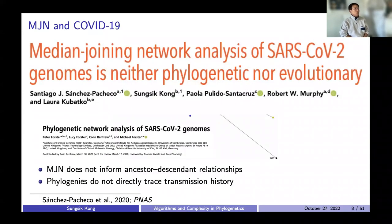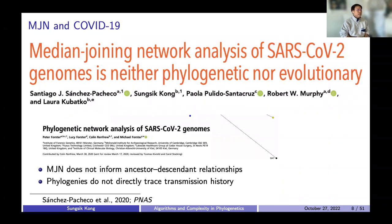So myself, along with my colleagues and advisors, submitted a rebuttal letter to PNAS, also with a strong title saying 'The Median Joining Network Analysis Is Neither Phylogenetic Nor Evolutionary.' In this study, we tried to make two points. The first is that the median joining network does not inform ancestor-descendant relationships; therefore, we can't identify the origin of the pandemic. The second point is that even if somehow the median joining network told us something about phylogenetic relationships between viruses, relying on a single phylogenetic tree to trace transmission history is not a good practice.